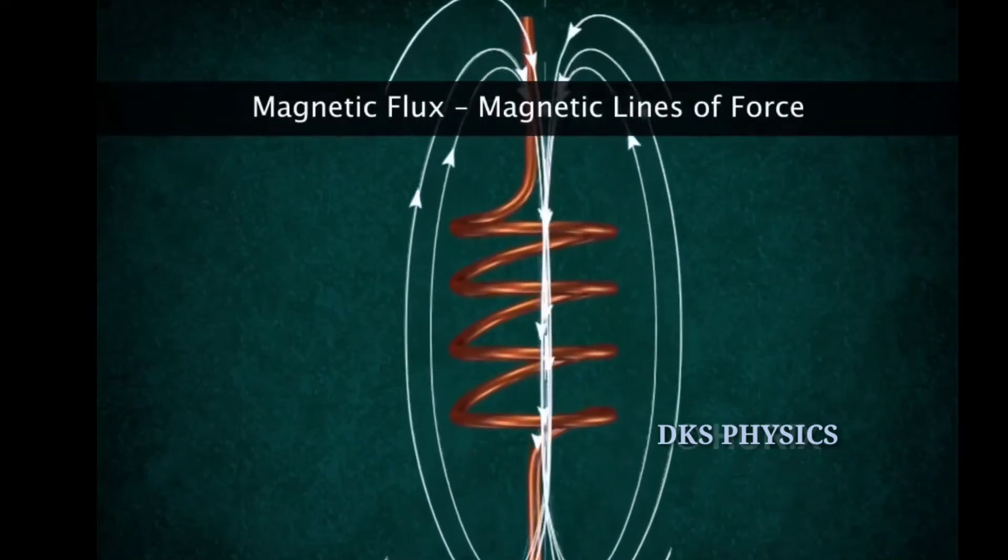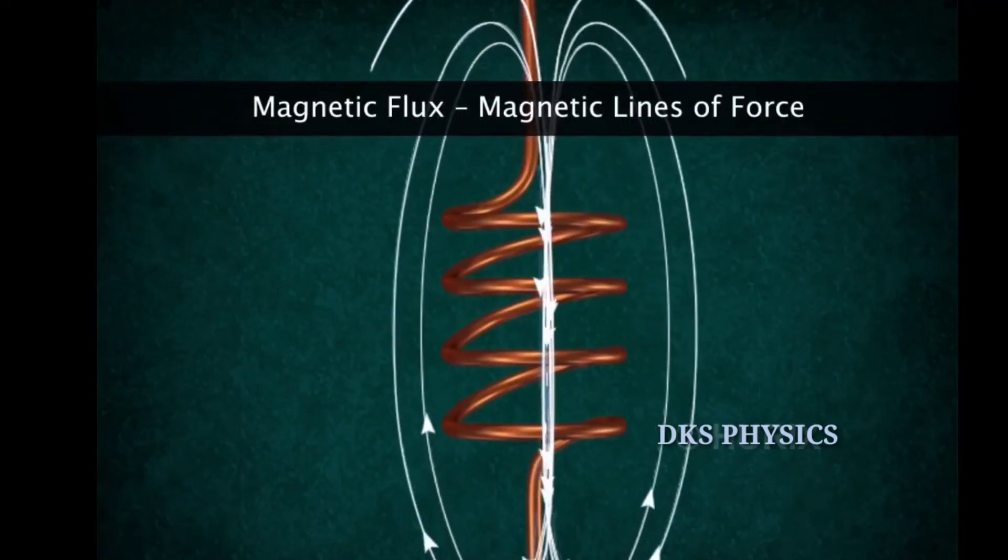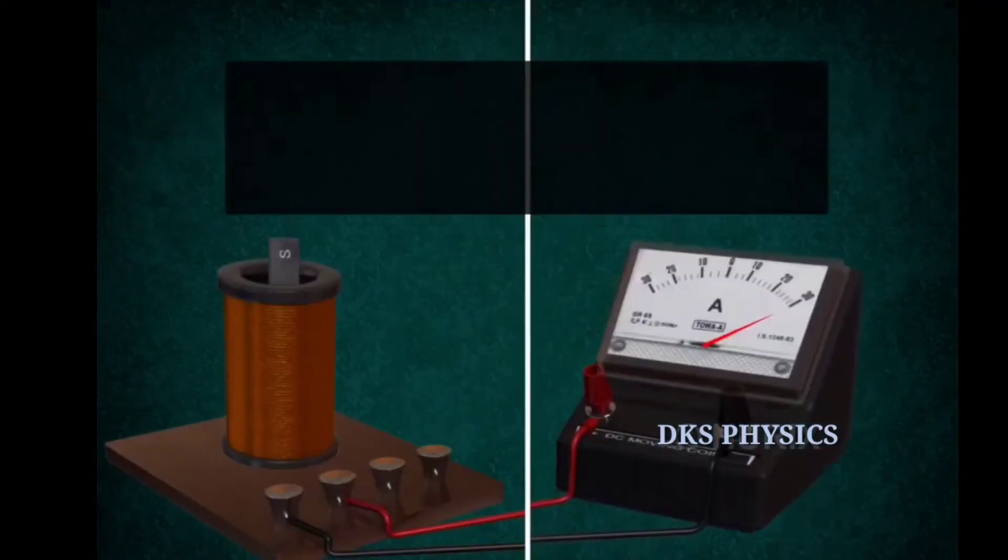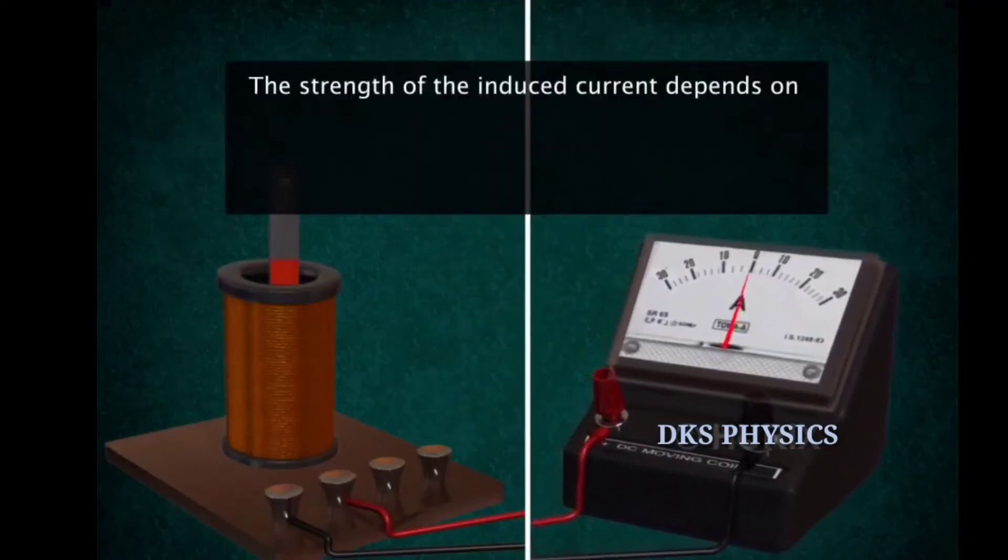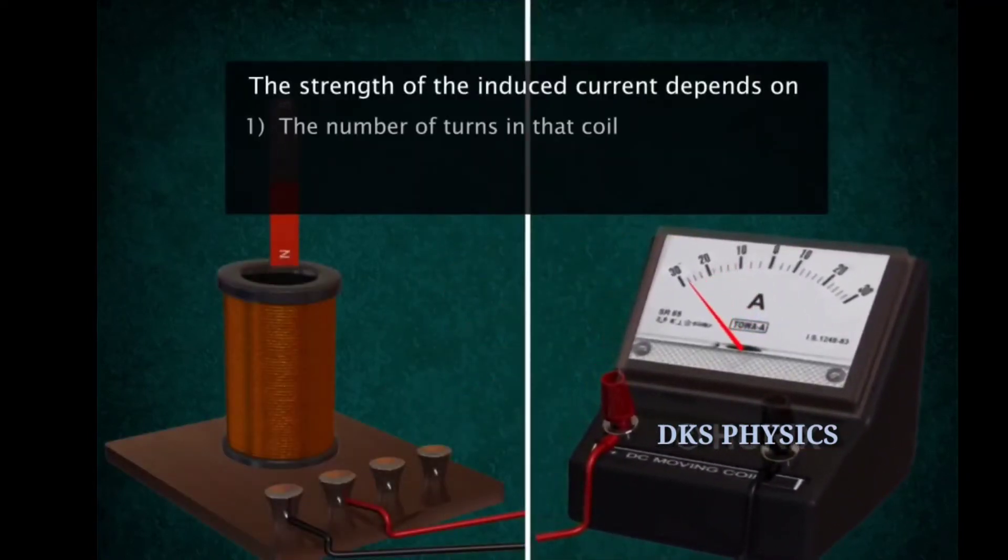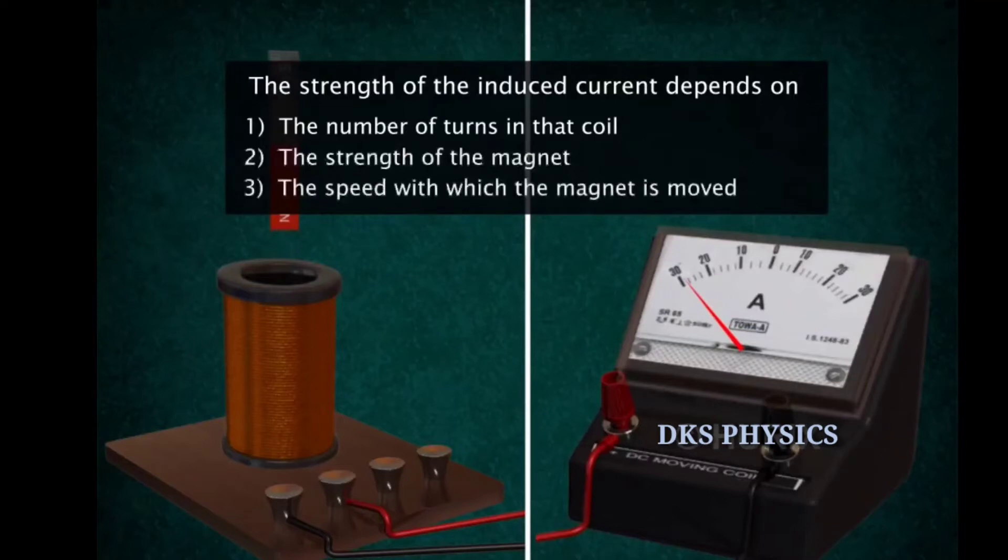Magnetic flux is the number of magnetic lines of force. The strength of the induced current depends on the number of turns in that coil, the strength of the magnet, and the speed with which the magnet is moved.